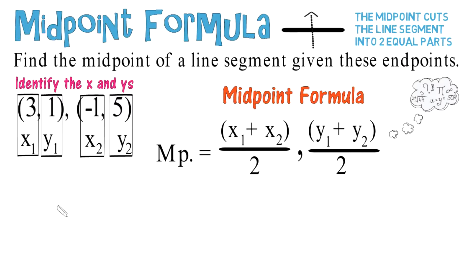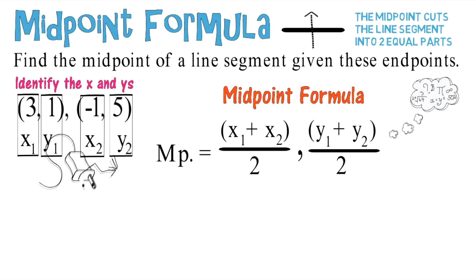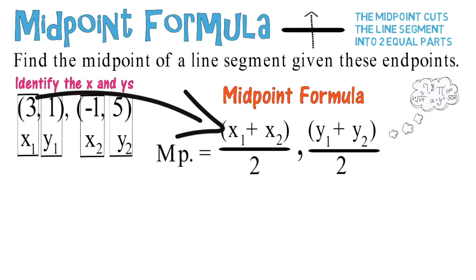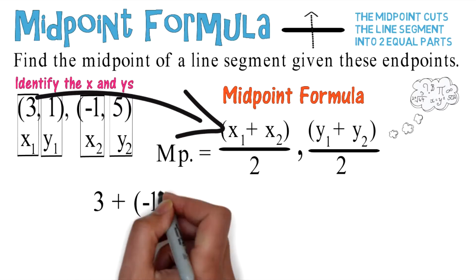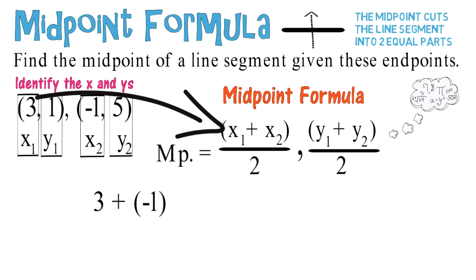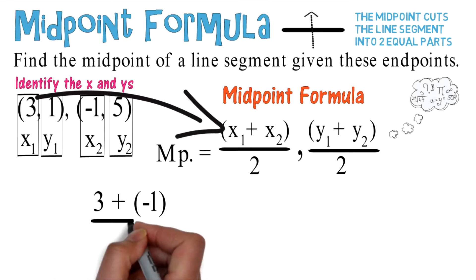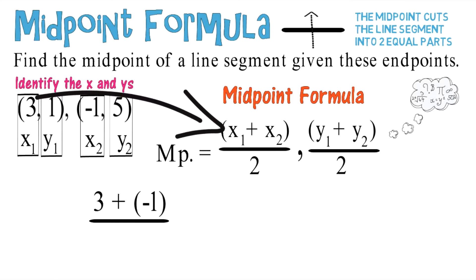At this point, you're going to take those numbers and plug them into the formula. Plug in 3, 1, -1, and 5 into their corresponding variables. You wind up with (3 + (-1)) divided by 2 for the x-coordinate.